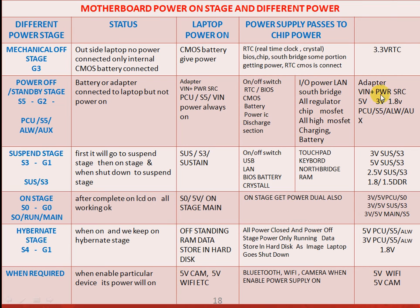Adapter WIN or POWER_SRC connected. When we press the power-on button, first the suspend mode power — SUS/S3 — will come on. SUS power will be on. It goes back to the on/off switch; USB, LAN, C-RAM also get power; north bridge type — all these will be on. The supply will be like 3V SUS S3, 5V SUS or 5V S3, 2.5V, 1.8V, and some more powers.